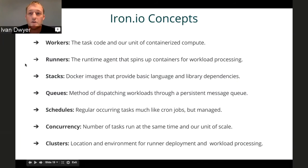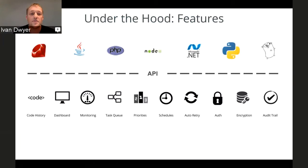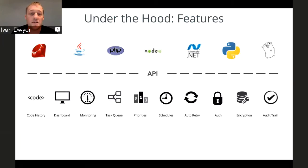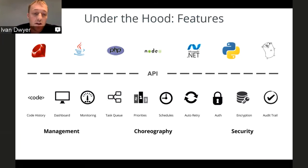Let's quickly get under the hood. Building this stuff out is fairly complex. From the work we've done over the years and the feature set we've developed, we definitely know the challenges — not just from choreographing task-based work, but also from a management and security perspective. We have our native libraries for the major popular languages, and that's really all developers need to interface with, because those natively interface with our API. From a code management perspective, we do code history and code versioning — very much like checking in your application code. We have a dashboard and various monitoring features so that you can actually manage and maintain your tasks, schedules, and queues.